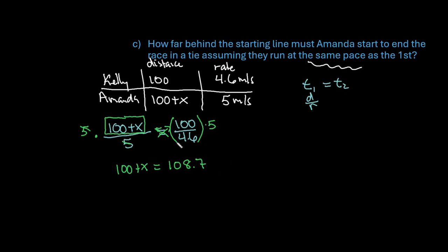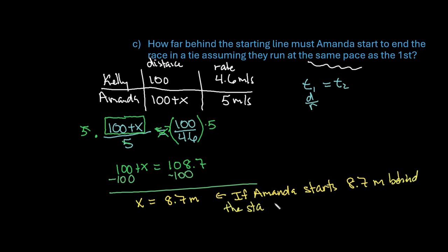You end up with 108.7 as our total amount when we multiply that out. If we're trying to figure out our distance, we would subtract 100 from both sides, and we can see that x ends up being 8.7 meters. So we're looking at the distance behind. If Amanda starts 8.7 meters behind the starting line, they will cross the finish line at the same time.